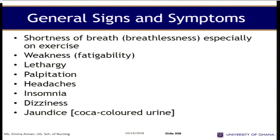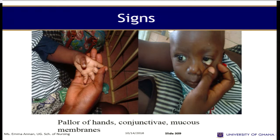The general signs and symptoms of anemia include shortness of breath especially on exercise, weakness, lethargy, palpitation, headache, insomnia, dizziness, and jaundice. A child with anemia will have white or pale hands, conjunctiva, and mucous membranes — a paper-white pallor. If nothing is done, you can lose a child very quickly.